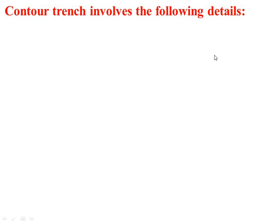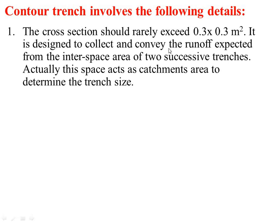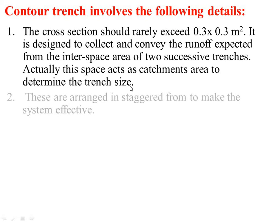The contour trench involves the following details. The cross section should rarely exceed 0.3 x 0.3 m². It is designed to collect and convey the runoff expected from the interspace area of two successive trenches. This space acts as the catchment area to determine the trench size. These are arranged in a staggered form to make the system effective.